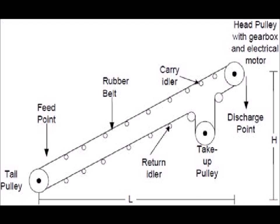Now let's look at conveyor safety components. First, the conveyor structure is important. Starting from the tail pulley and feed point, where material like iron ore is loaded, then the rubber belt carries it up. Next are the carry idlers, head pulley with gearbox and electric induction motor, then the discharge point. Also important are the take-up pulley and return idlers.